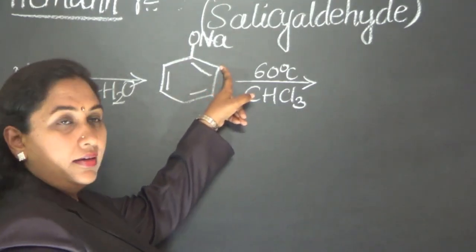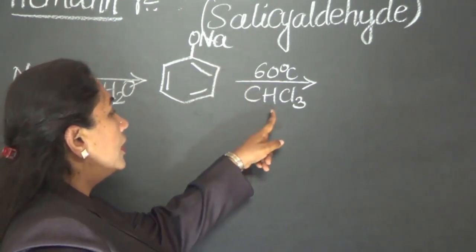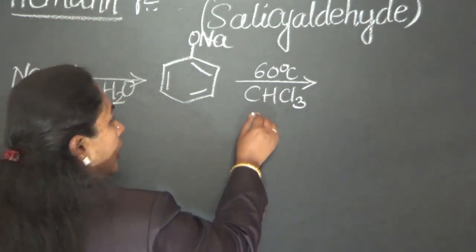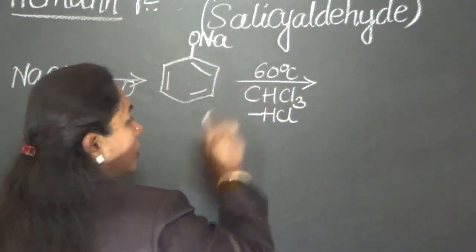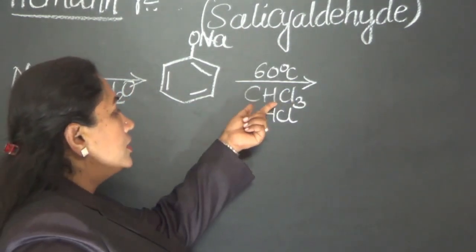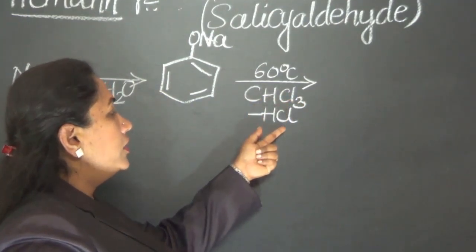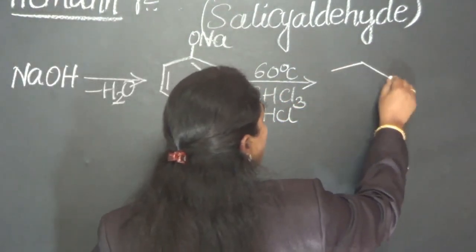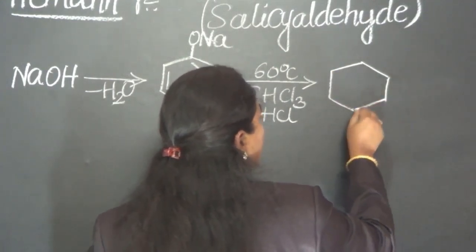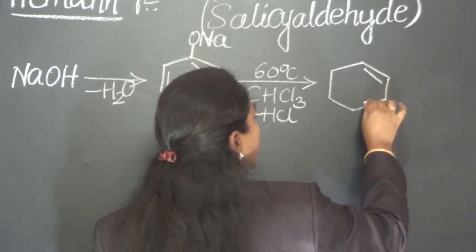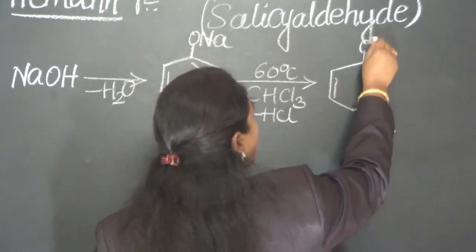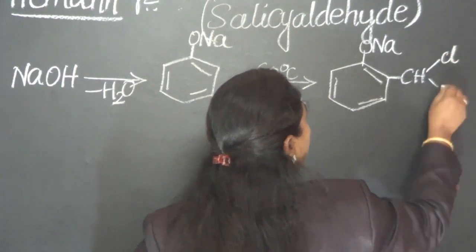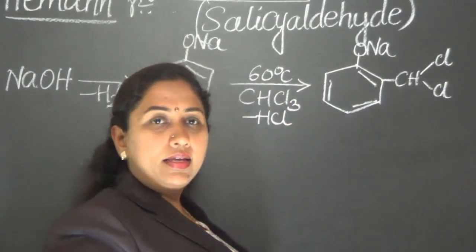One hydrogen present on the benzene ring will come out and that hydrogen reacts with one chlorine from CHCl3, coming out as HCl — so minus HCl. What we are left with is CH and Cl2, because one chlorine has been removed. Therefore, we attach CHCl2 to the benzene ring.